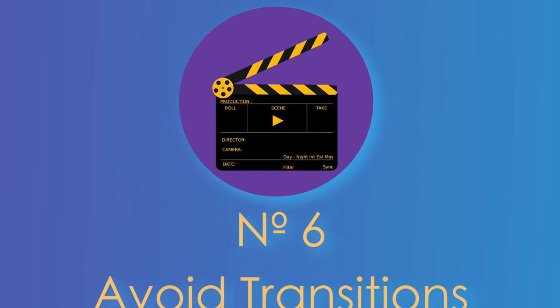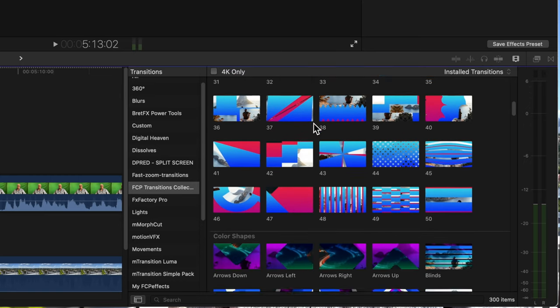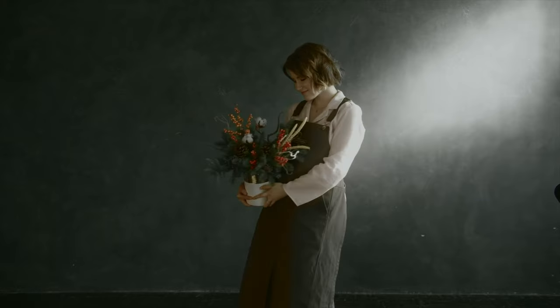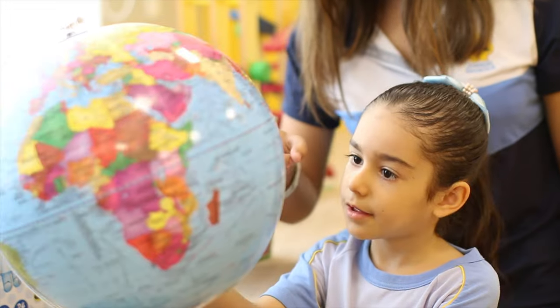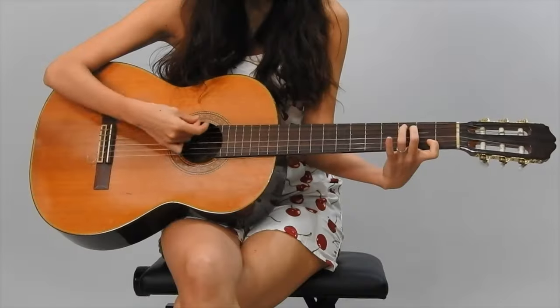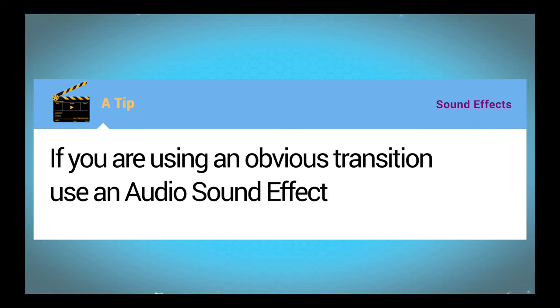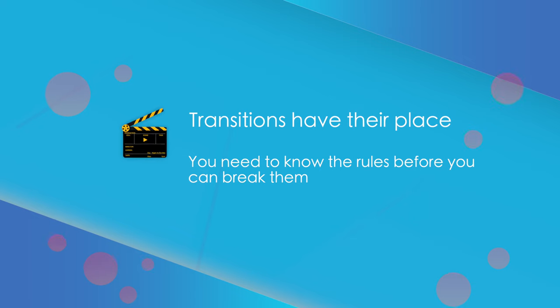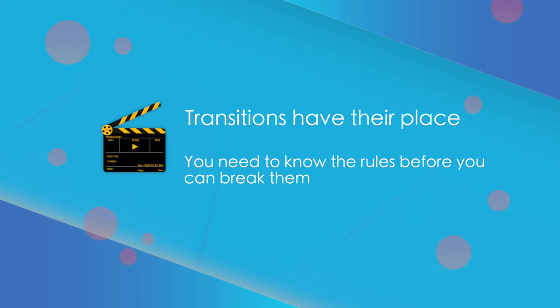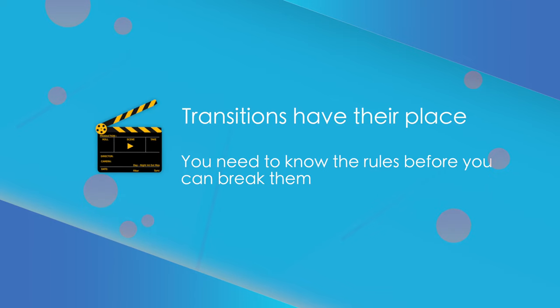Number six: avoid transitions — except for fade and dissolve. Just because your computer has a star wipe transition doesn't mean you're compelled to use it. With the exception of a few scenes from a Star Wars-type video, you rarely need a transition other than dissolve or fade to black. You might think a star wipe looks cool, but it'll wear off after the audience has seen it a few times. On the other hand, if you want to announce a new story or show a scene that's a jump back in time, a transition can really help that effect. As an extra tip: if you're using an obvious video transition, add an audio sound effect to make it more noticeable to the viewer. Transitions have their place, but as I said before, you need to know the rules to be able to break them.